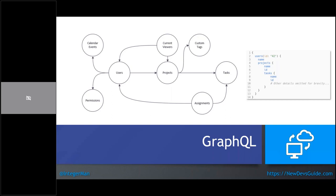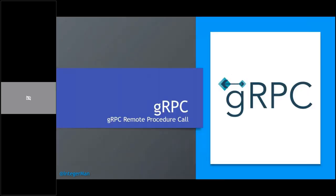gRPC is another technology that can help with API performance. It uses compression and binary streaming between client and server in a manner that's resistant to issues when you expand your server. gRPC is best when you control both the client and the server — really good for server-to-server API communication. It tends to be very fast because it uses binary data, but it's harder for external parties to use compared to REST.